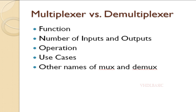In summary, a multiplexer combines multiple inputs into a single output, while a demultiplexer splits a single input into multiple outputs. They are often used together in communication systems to effectively transmit and distribute data to multiple locations or devices.